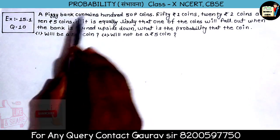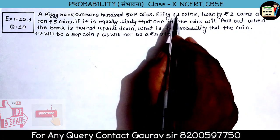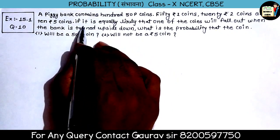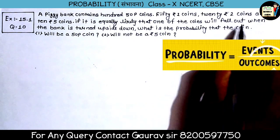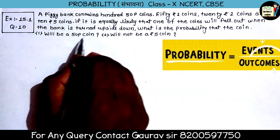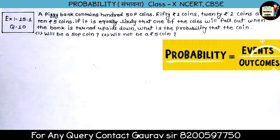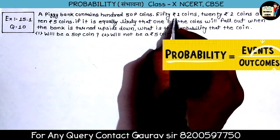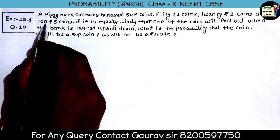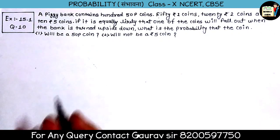Question 10: A piggy bank contains 150 coins — 50 paise coins: 100, one-rupee coins: 50, two-rupee coins: 20, and five-rupee coins: 10. If it is equally likely that one of the coins will fall out when the bank is turned upside down, what is the probability that: first, it will be a 50-paise coin; second, it will not be a 5-rupee coin?